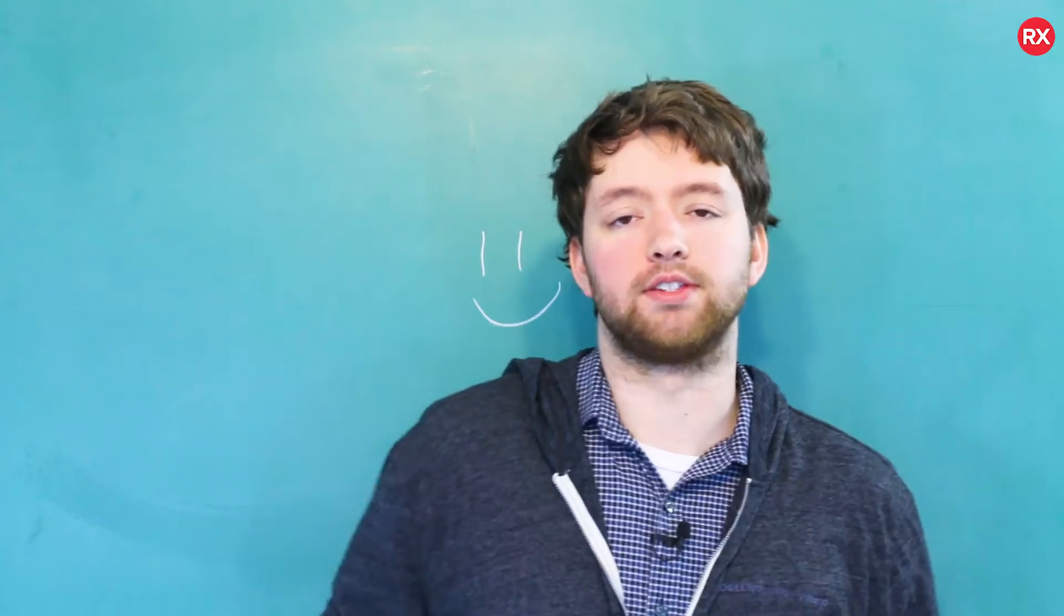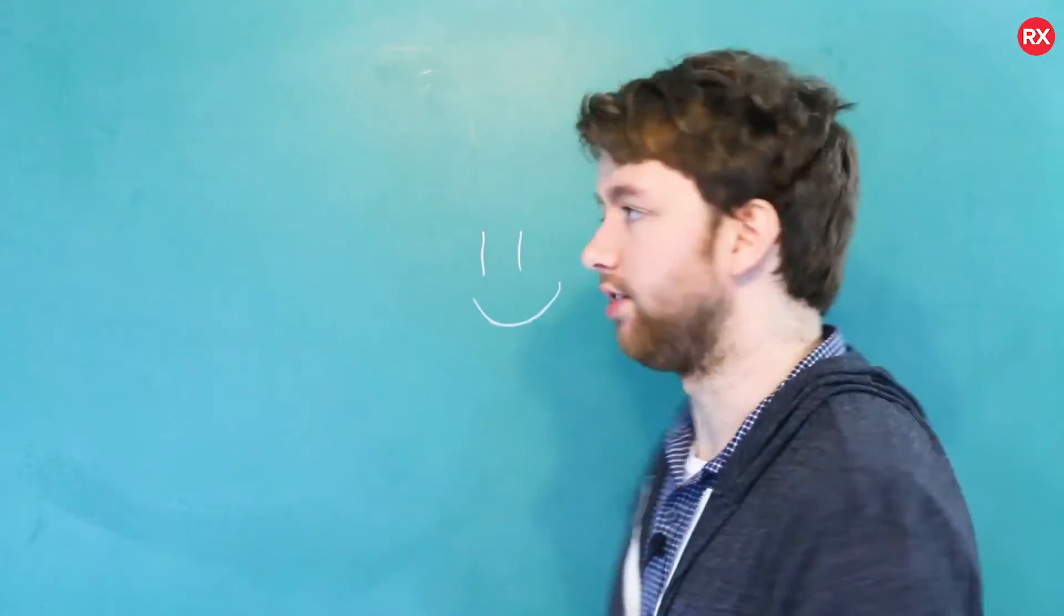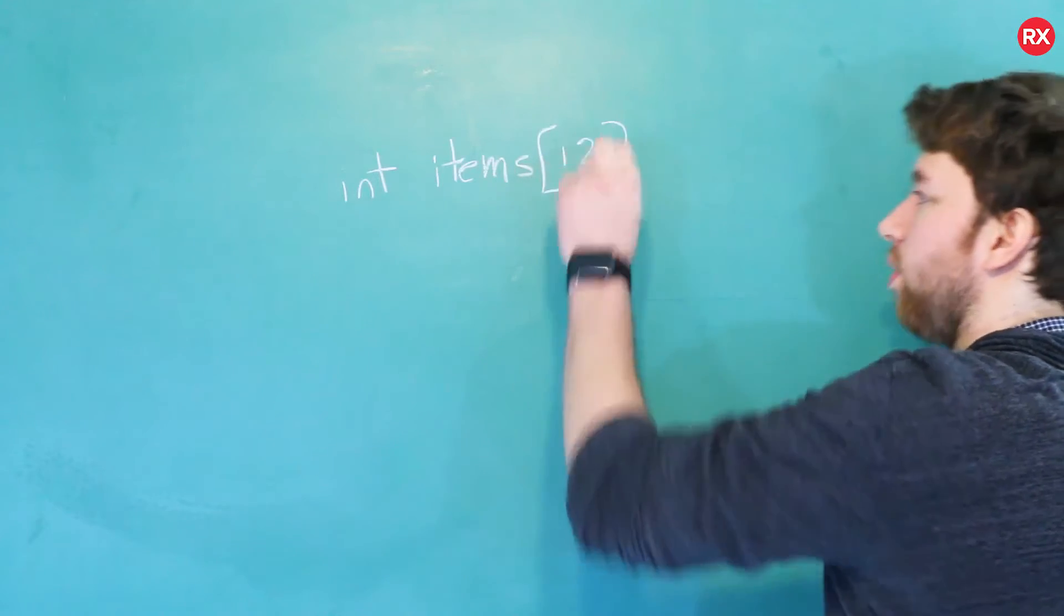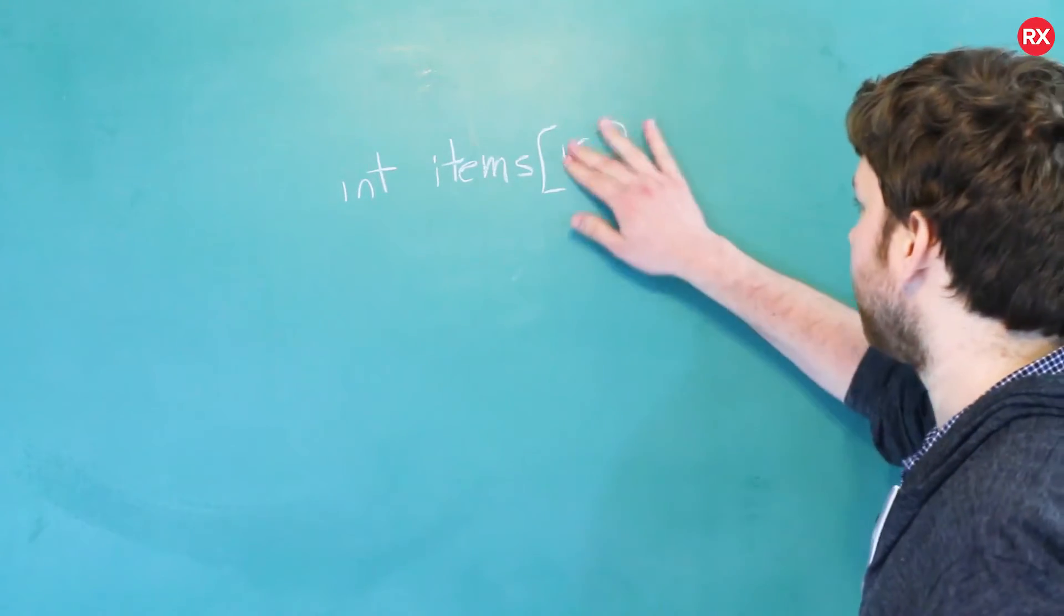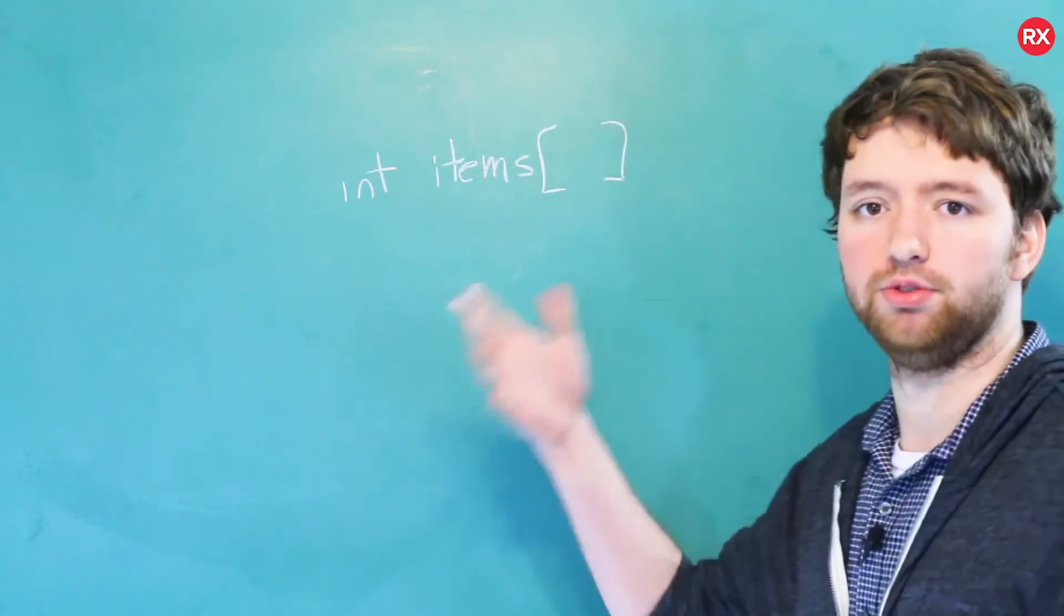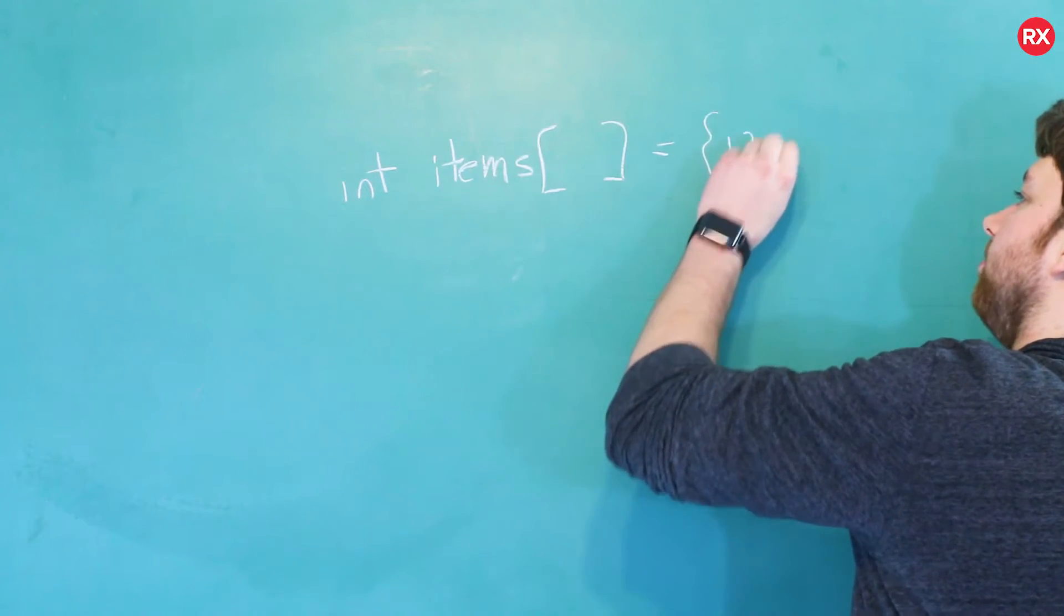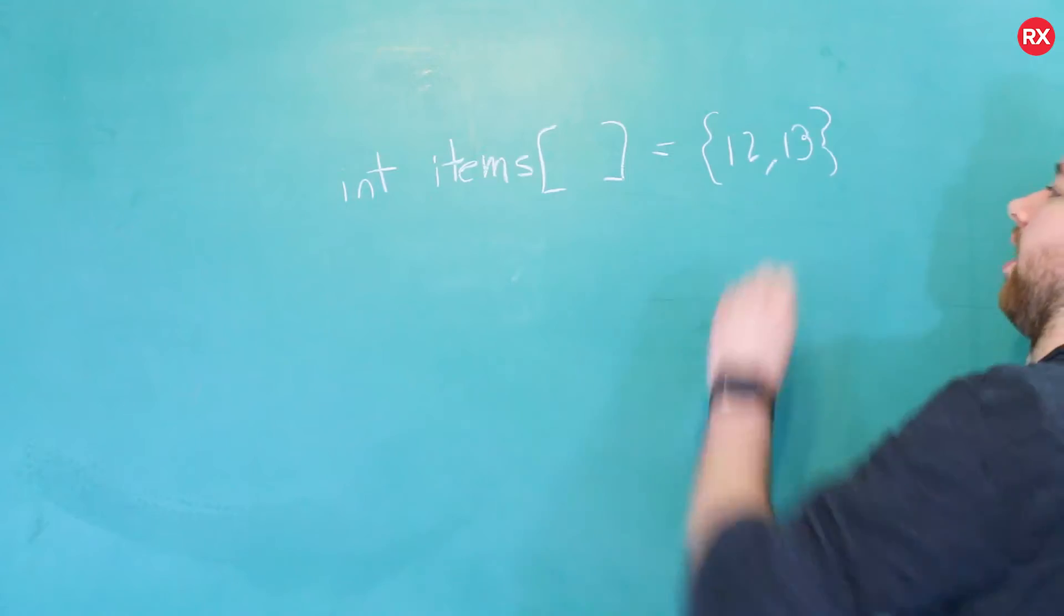So with an array, the size is static. When you create an array, you put the size inside of square brackets, such as 12, for example, or you assign it something that would allow it to determine the size. So you might assign a sequence of values, and in this case, the size would be 2.